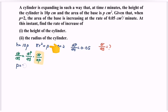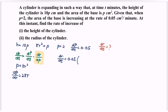Since p is equal to pi r squared, we differentiate p with respect to r, giving us 2 pi r. Substituting into the chain rule: dr/dt is equal to dp/dt, which is 0.05, multiplied with dr/dp — so we flip the situation and it becomes 1 over 2 pi r.